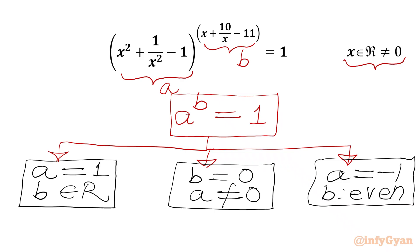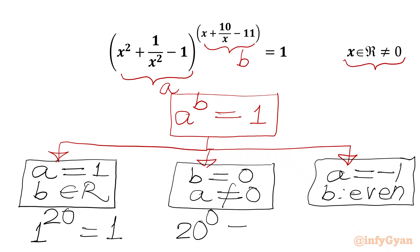Let's understand through 3 examples. For case 1: 1 raised to the power 20 — 20 is a real number and base is 1, so we get 1. For case 2: 20 to the power 0 — base is non-zero and power is 0, value is always 1. For case 3: minus 1 raised to the power 20 — 20 is even and base is minus 1, so we get 1.